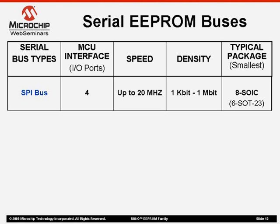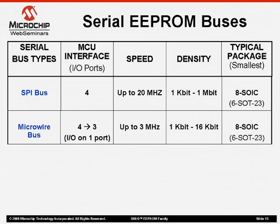The SPI bus requires four IO ports for communication and is usually selected when speed and higher densities are required. The most common package used for EEPROMs is the 8-lead SOIC, but Microchip also offers lower density devices in the 6-lead SOT-23. The Microwire bus also uses four IO ports for communication and can be selected instead of the SPI bus when slower communication speeds and lower densities are required. Sometimes designers will tie the input and output of the Microwire EEPROM together to connect to a single IO port — this configuration is called a 3-wire bus. Like the SPI bus, the most common package is the 8-lead SOIC, but the 6-lead SOT-23 is also offered by Microchip.